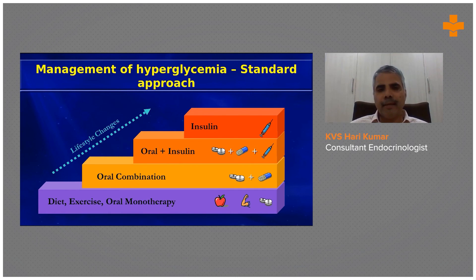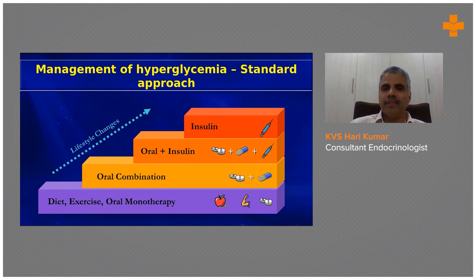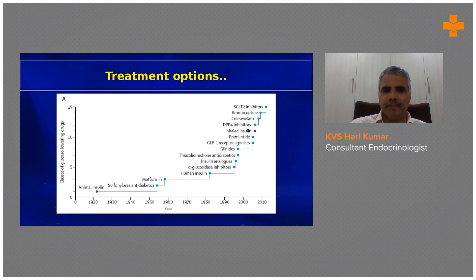Looking at hyperglycemia management, the traditional pyramidal approach starts with diet, exercise, and oral monotherapy as the foundation, then progresses to oral combination, then oral plus insulin, and finally multiple doses of insulin. This is the standard type 2 diabetes management approach.